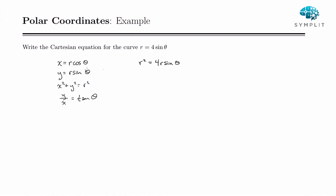Well now r squared, that's x squared plus y squared, and r sine theta, that's y. So that's the Cartesian equation for this polar curve.